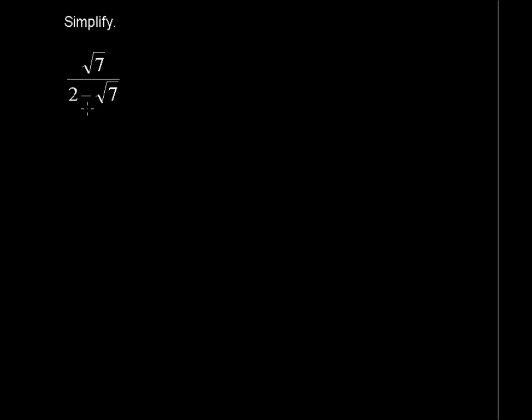So a conjugate is simply written just like what we see here when you've got a rational component and an irrational component. That is, something without a radical and something with a radical. And you write it just like it, but you just change the sign. So the conjugate of 2 minus the square root of 7 is 2 plus the square root of 7.